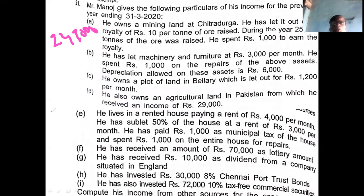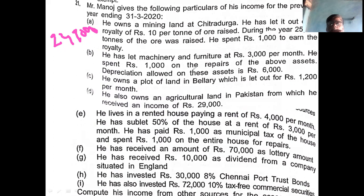If you deduct 1,000 allowable expense from 2,50,000 you get income of rupees 2,49,000 — that is the first point. The second point is he has let out machinery and furniture at rupees 3,000 per month, so annual rent is 36,000. He spent 1,000 on repairs and 6,000 for depreciation, so allowable expenses are 7,000. 36,000 minus 7,000 gives net income of 29,000.